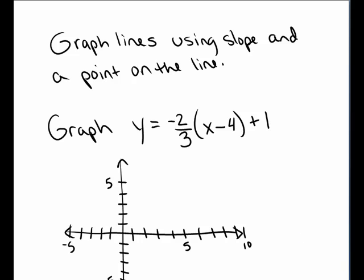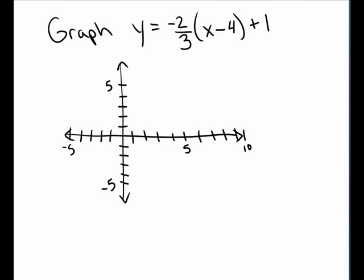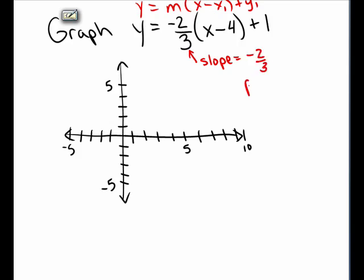In the first example, we want to graph the line y equals negative 2 thirds times the quantity x minus 4 plus 1. This is in the form y equals m times x minus x1 plus y1. m represents the slope, and x1 comma y1 is a point on the graph. So in this case, the slope of this line is negative 2 thirds, and we know that there is a point on the line at 4 comma 1.